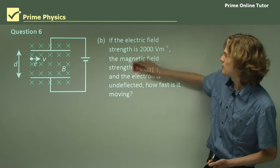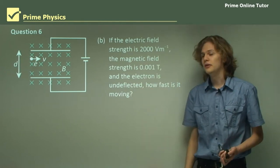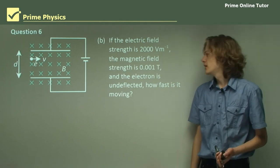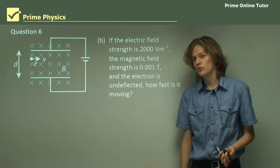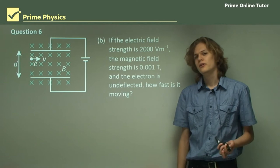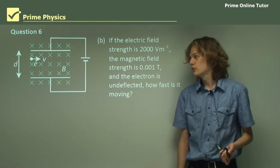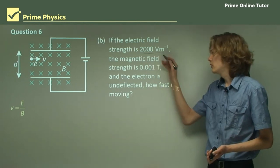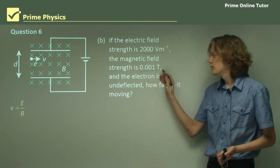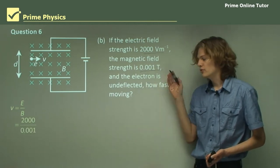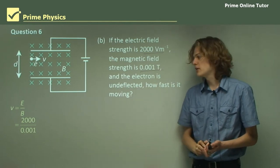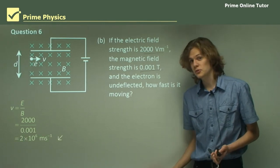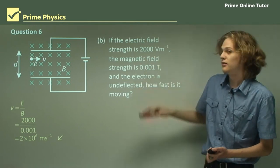Part B. If the electric field strength is 2000 volts per meter, which we found, the magnetic field strength is 0.001 tesla, and the electron is undeflected, how fast is it moving? As you recall, the equation for the velocity of an undeflected electron is v equals E on b. We know the strength of the electric field, e, and we know the strength of the magnetic field, b. Substituting these into the expression, we get 2000 divided by 0.001, which we can evaluate on a calculator to find our answer, 2 million meters per second. That's quite fast.